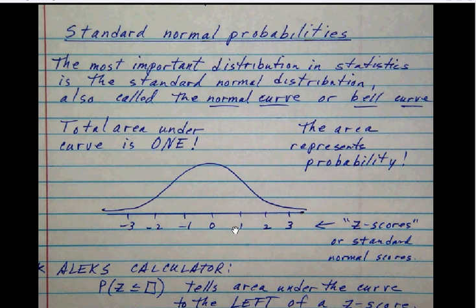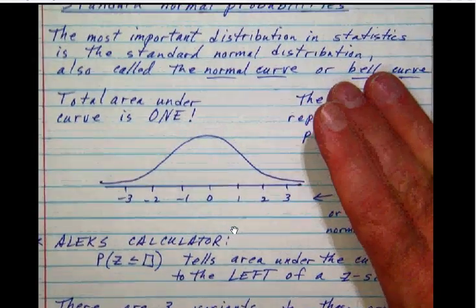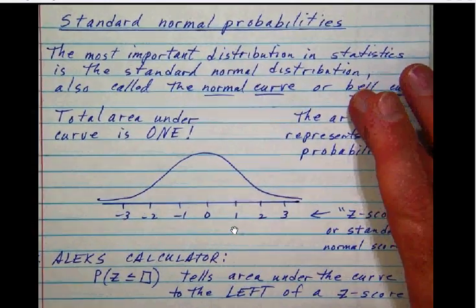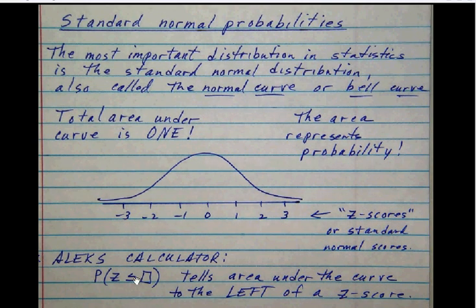Now, coming up with these areas would be a very difficult thing, except for the fact that we have the ALEKS calculator. What the ALEKS calculator does for us is very useful. It has this button, the P of Z button, and once again, this P stands for probability, which is area. So this button, the most important thing to learn is what does this button do? Answer: